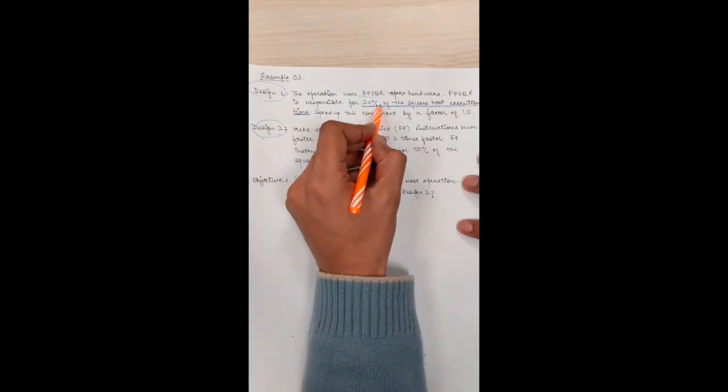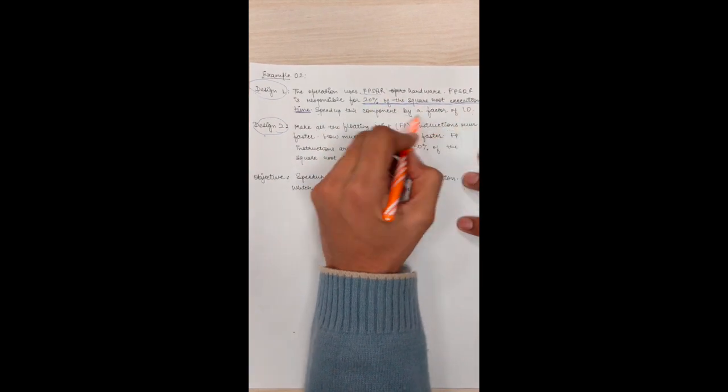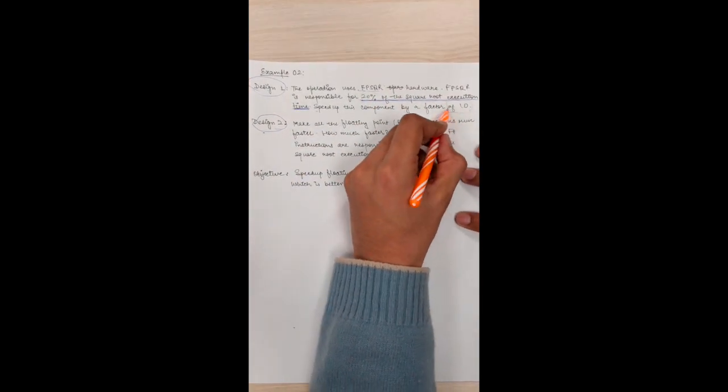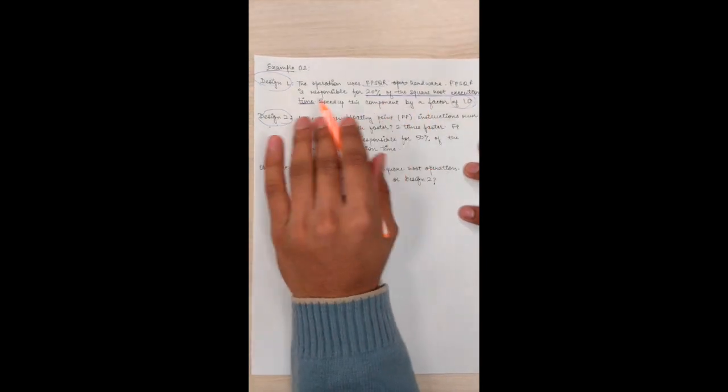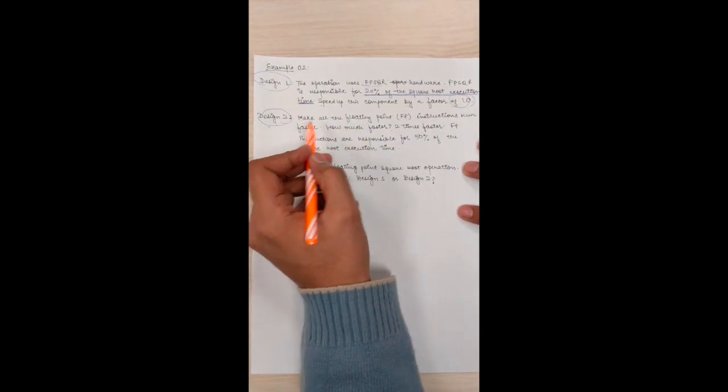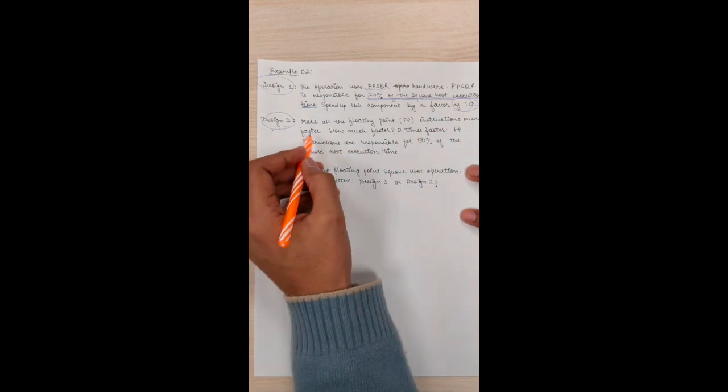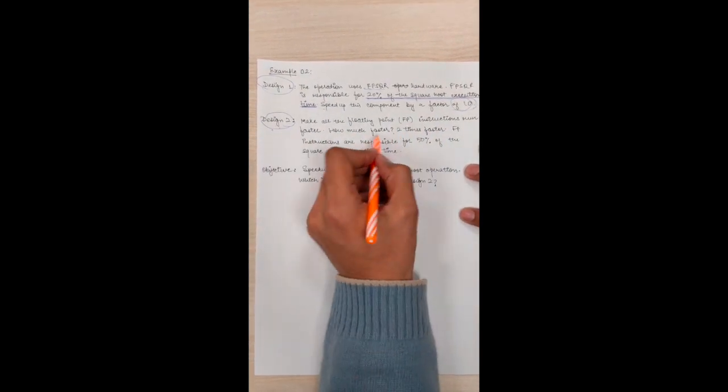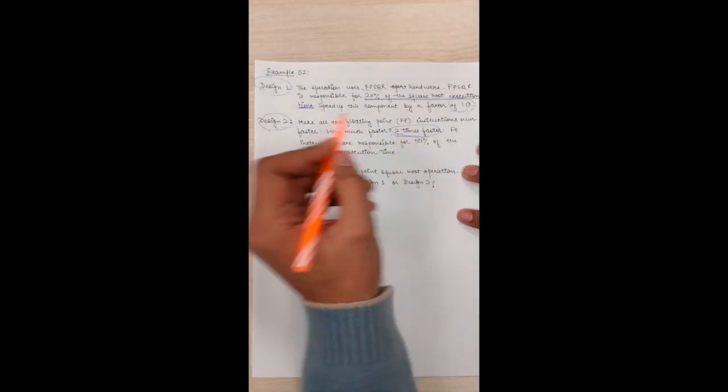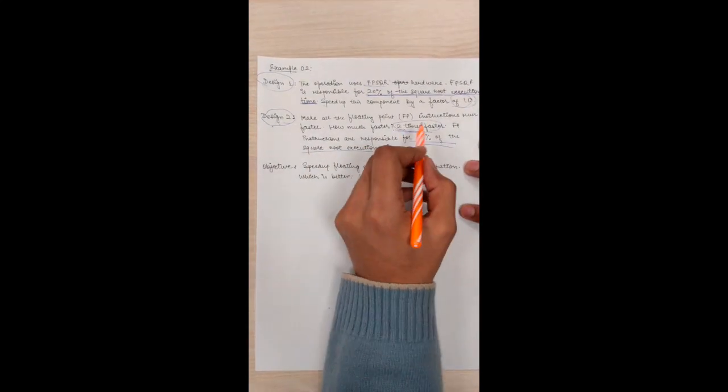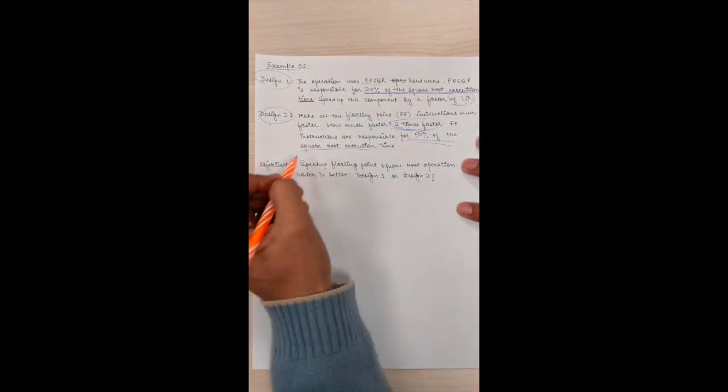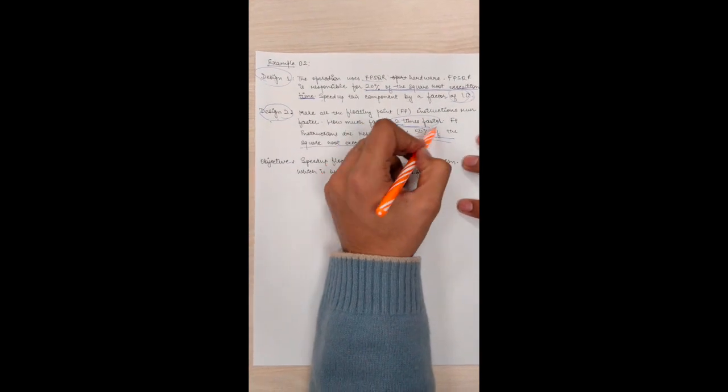This operation uses FPSQR software and it's responsible for 20% of the square root execution time. Keep in mind we have to speed up the 20% of the square root execution time by a factor of 10. And similarly, Design 2 is a normal design which is making floating point instructions run faster. How much faster? 2 times faster. And it's responsible for 50% of the square root execution time. We'll make 50% of the square root execution time 2 times faster.